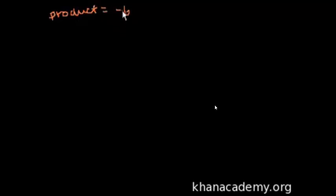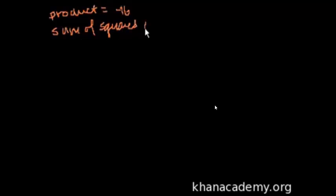The first problem is: find two numbers whose product is negative 16, so the product is equal to minus 16, and the sum of whose squares is a minimum. So sum of squares is a minimum.